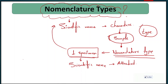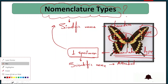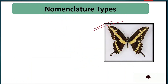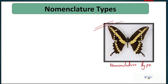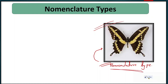There are different types of nomenclature types, but basically we will deal with four. A nomenclature type is a reference used for naming — a scientific name must be attached to a physical entity, which is the nomenclature type.